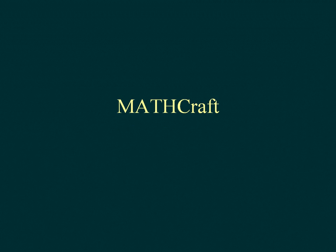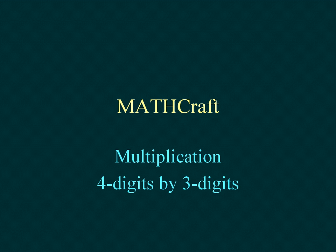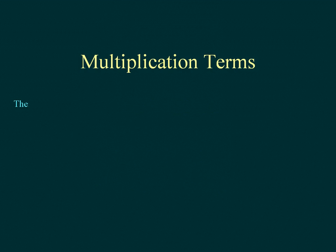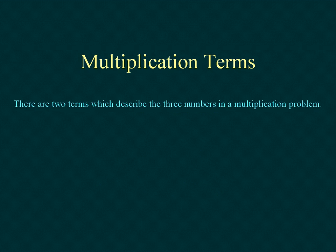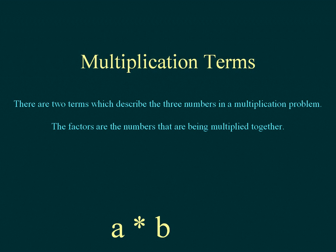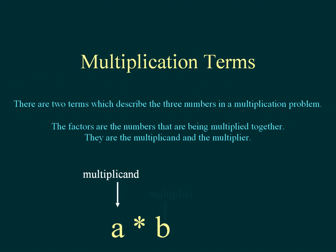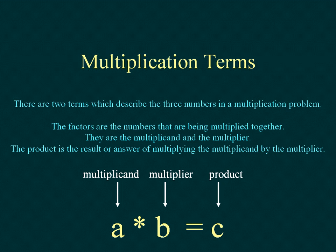Mathcraft. Multiplication: four digits by three digits. There are two terms which describe the three numbers in a multiplication problem. The factors are the numbers being multiplied together — they are the multiplicand and the multiplier. The product is the result or answer of multiplying the multiplicand by the multiplier.